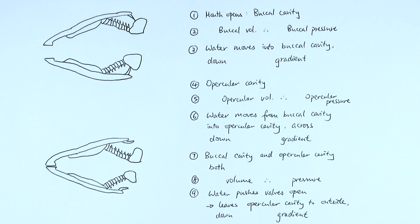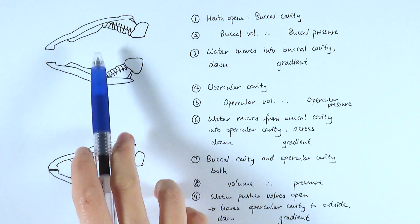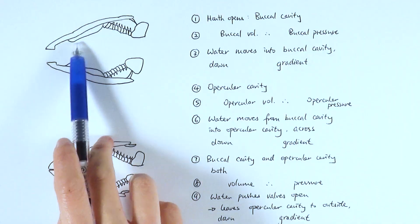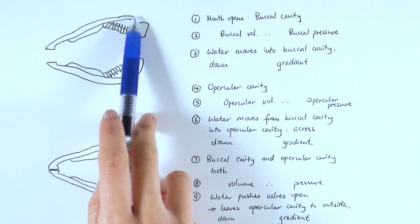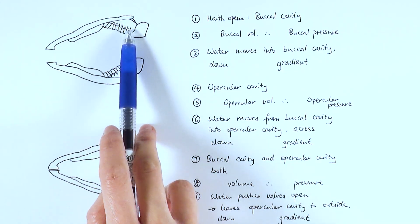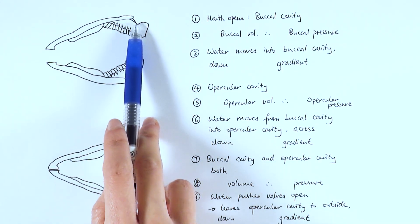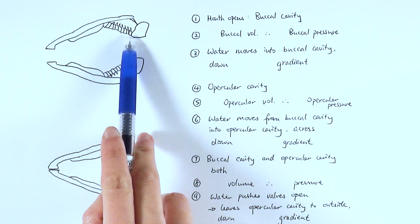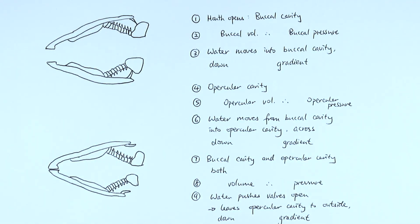For fish it's pretty much the same thing, except that we have to consider two different chambers: the mouth or buccal cavity, and the opercular cavity, which is between the gills and the outside bony layer of the operculum. Imagine we've got a fish here and we're looking from the top down. The buccal cavity is the mouth area, the operculum is the bony flap on the outside which protects the gills, and the opercular valve opens and closes the opercular cavity. The gills are located within this space.